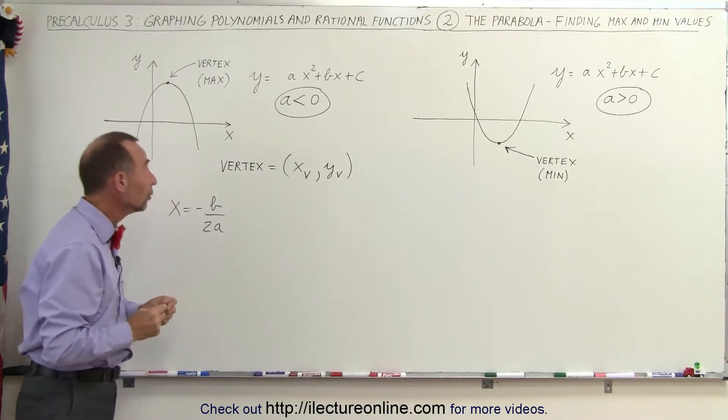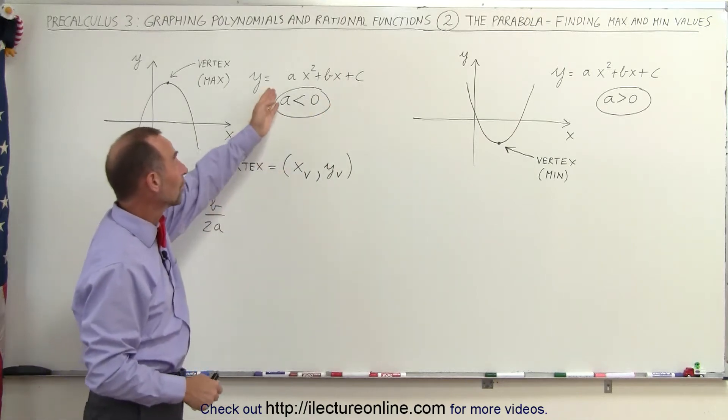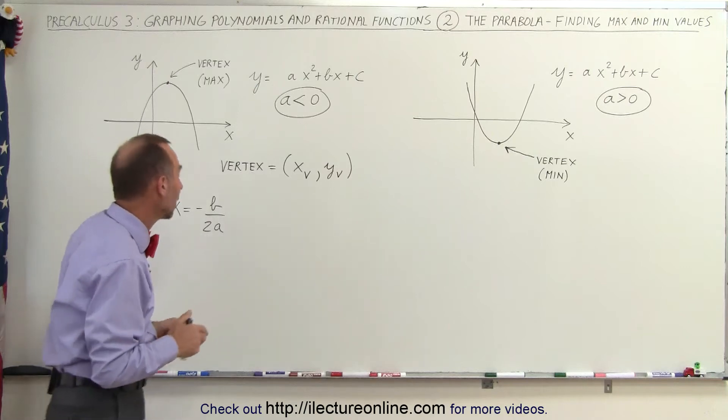Now what does that mean? Well notice that a, b, and c are the coefficients of the three terms that make up a quadratic equation, therefore that would be graphed as a parabola.